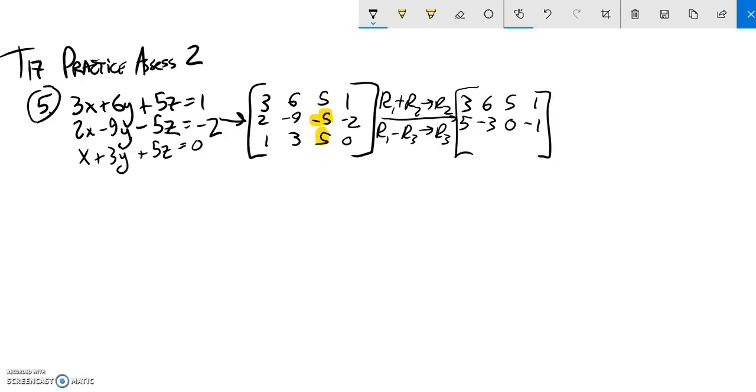And then next thing I'm going to do, row 1 minus row 3. So 3 minus 1 is 2. 6 minus 3 is 3. 5 minus 5 is 0. 1 minus 0 is 1.